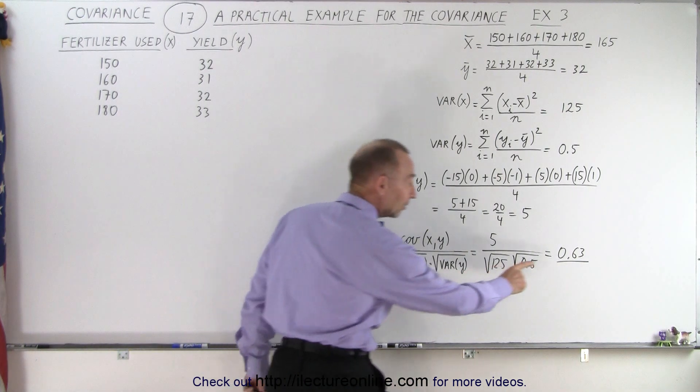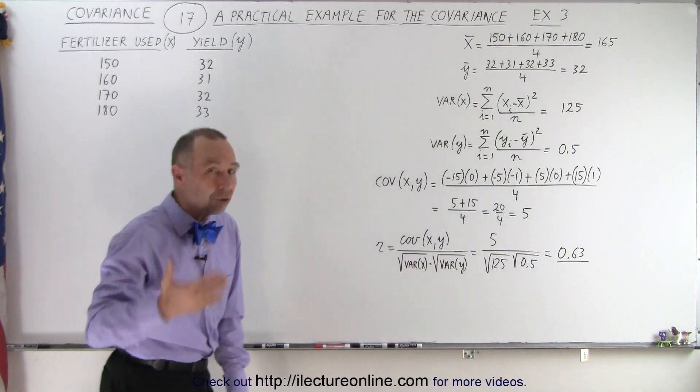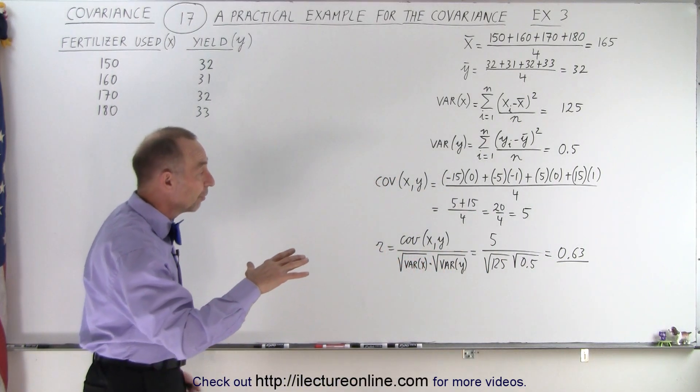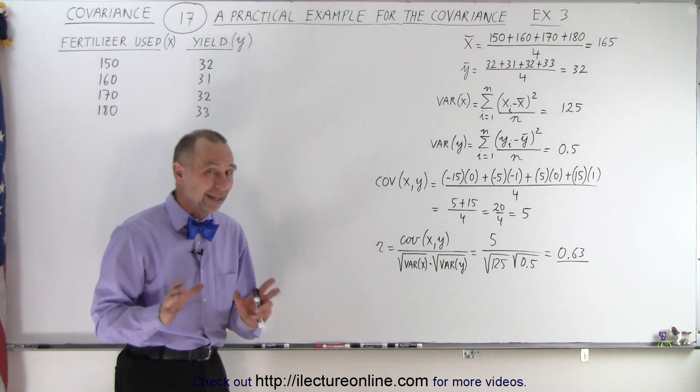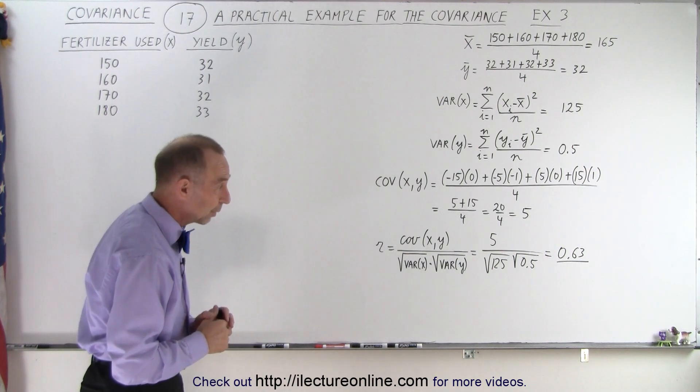Since it's still positive, it does indicate that there's some increase in the yield on average as compared to the amount of fertilizer used. But 0.63 means there's not a lot of correlation between the two.